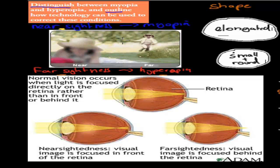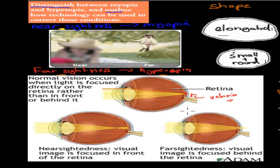You should also know the difference in terms of how it actually occurs. Normally we've got light which enters the cornea and then enters the lens, and it's getting bent to make sure it hits the back of the eye. The back of the eye is the retina, so the focal point — the point where all the light rays meet — is the retina. That's normal vision.